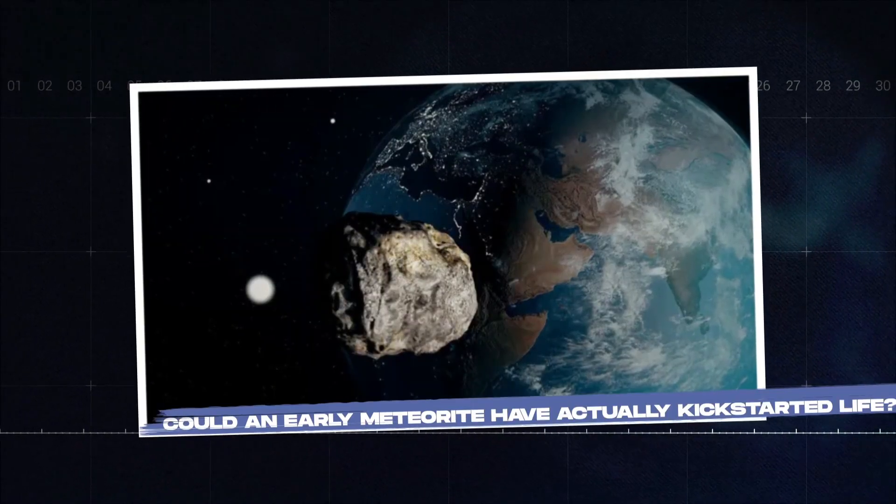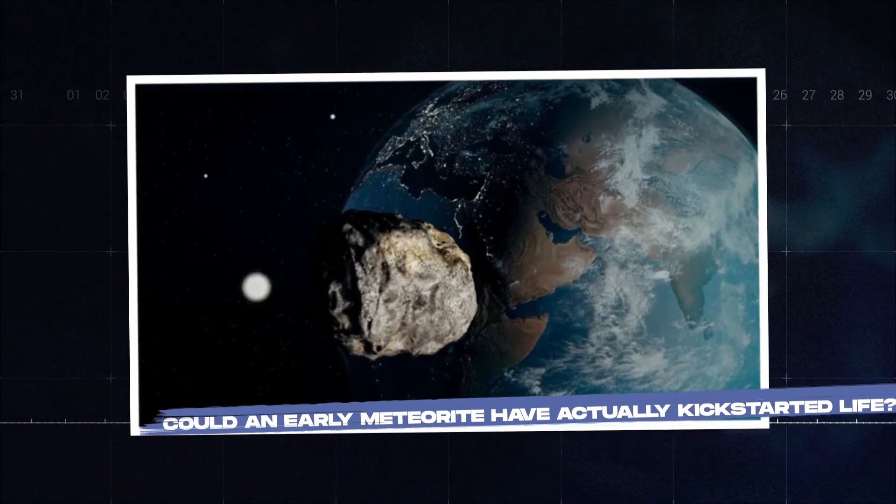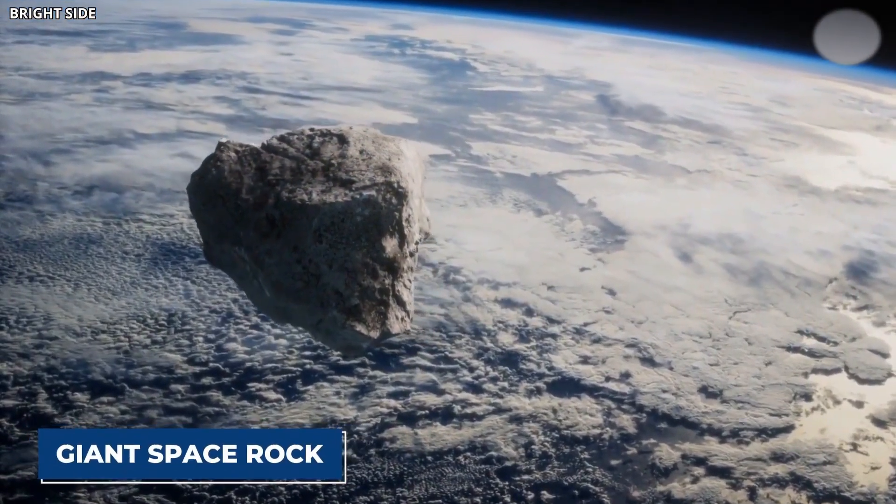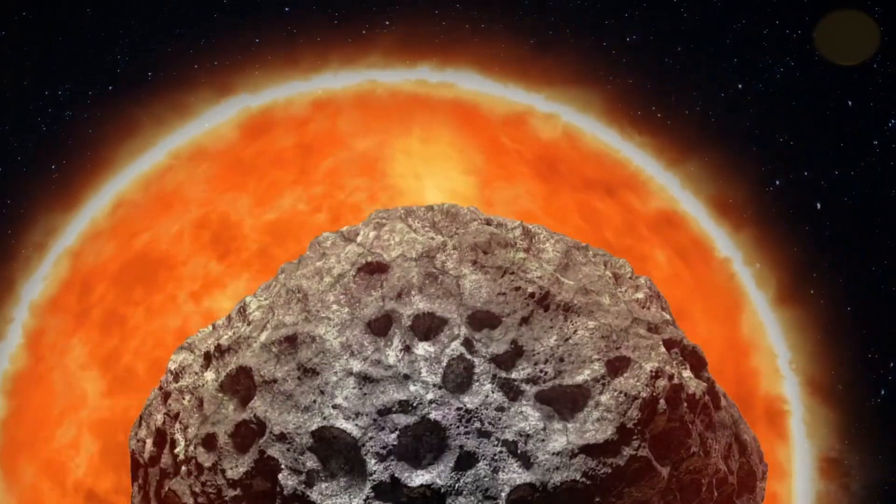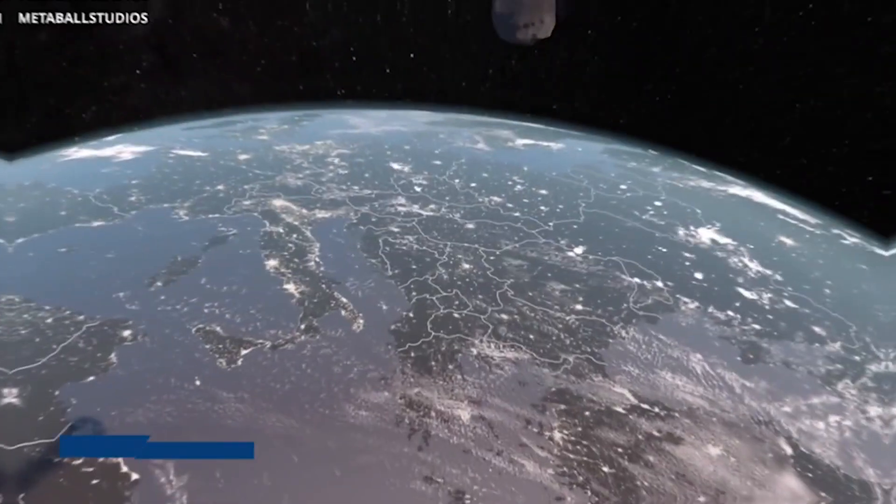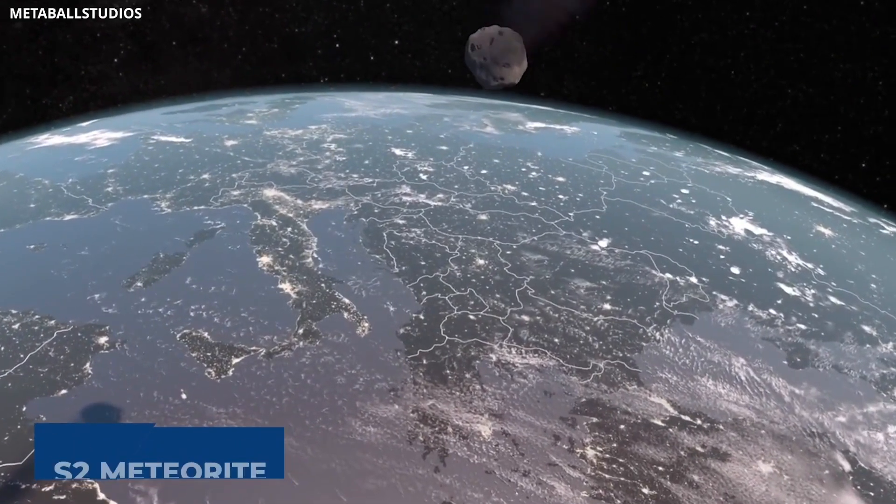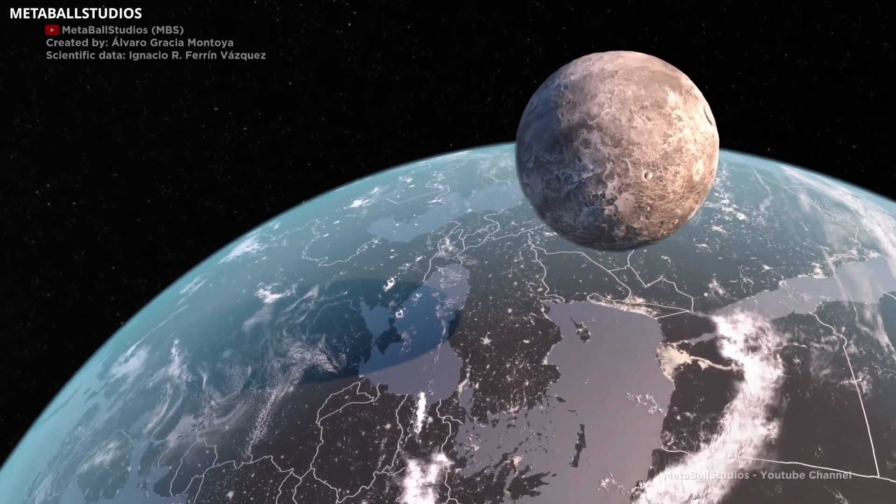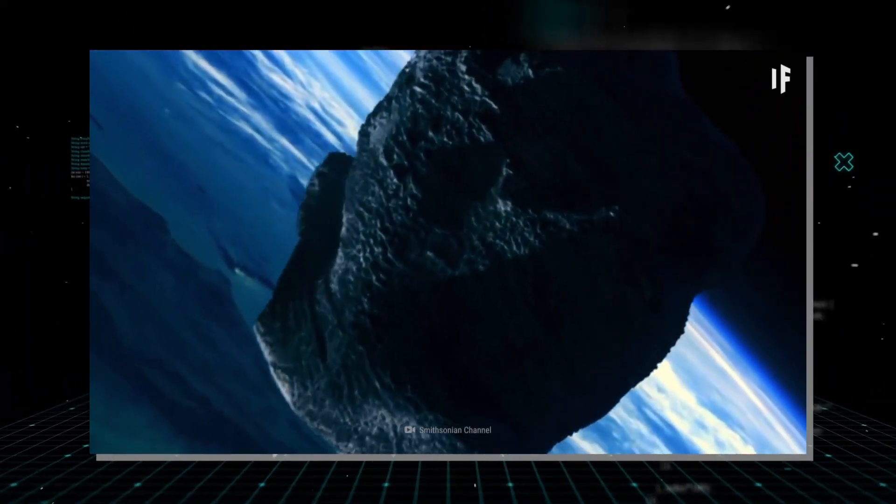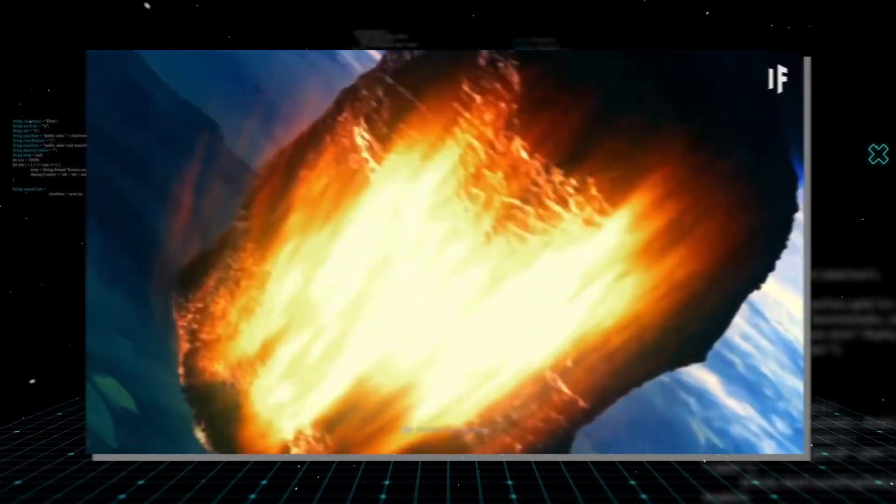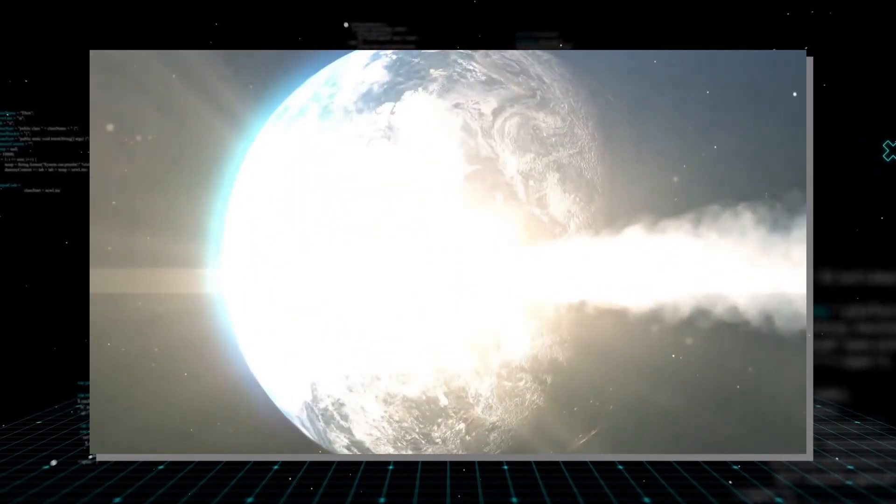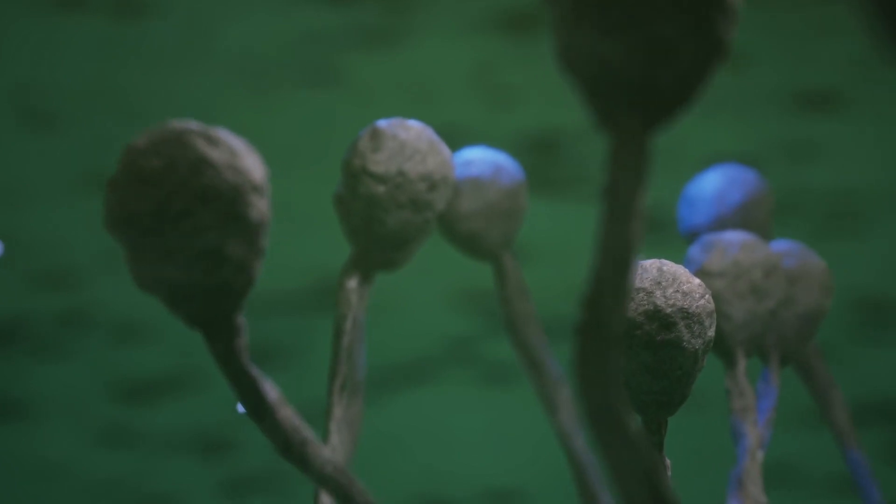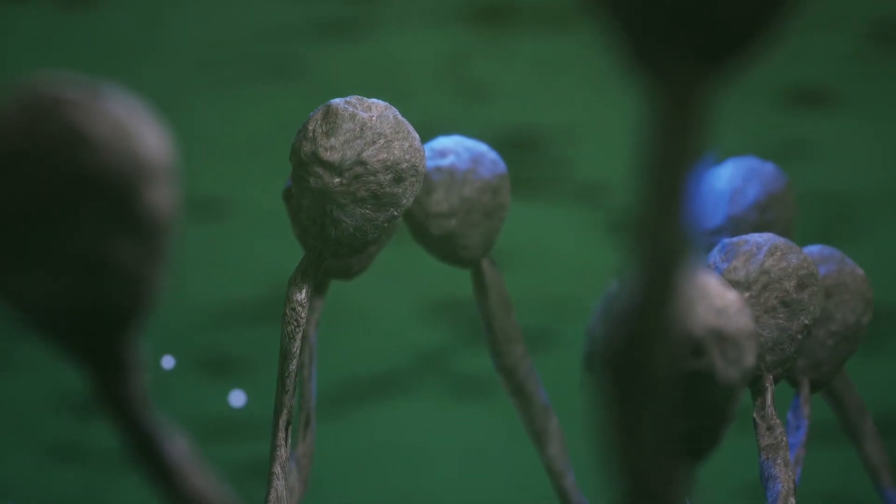So, could an early meteorite have actually kick-started life? Well, to answer this, we need to look at a giant space rock that hit Earth during the early stages of the solar system. The S2 meteorite, much larger than the Chicxulub asteroid, may have had some unexpected positive effects on Earth. While its size and impact would have caused significant disruption, a recent study suggests it may have acted as a gigantic fertilizer bomb that could have contributed to the conditions necessary for life to form and thrive.